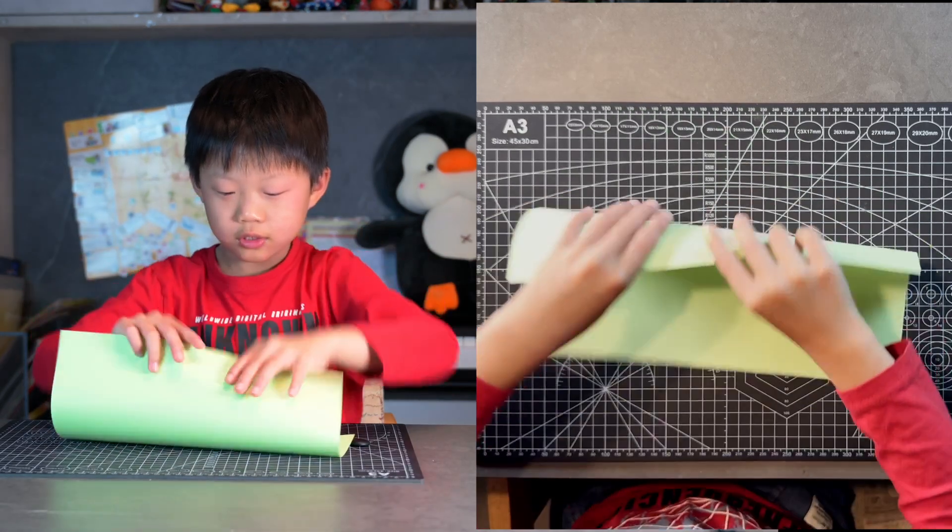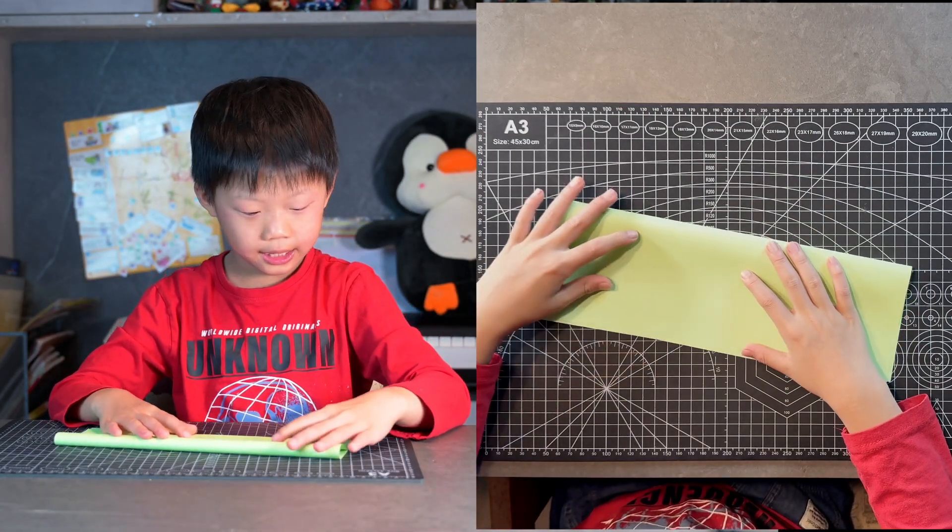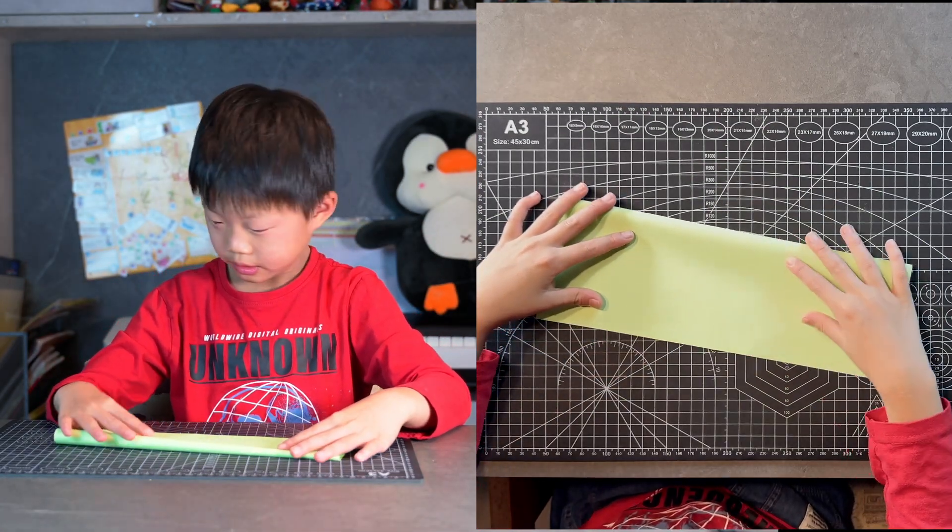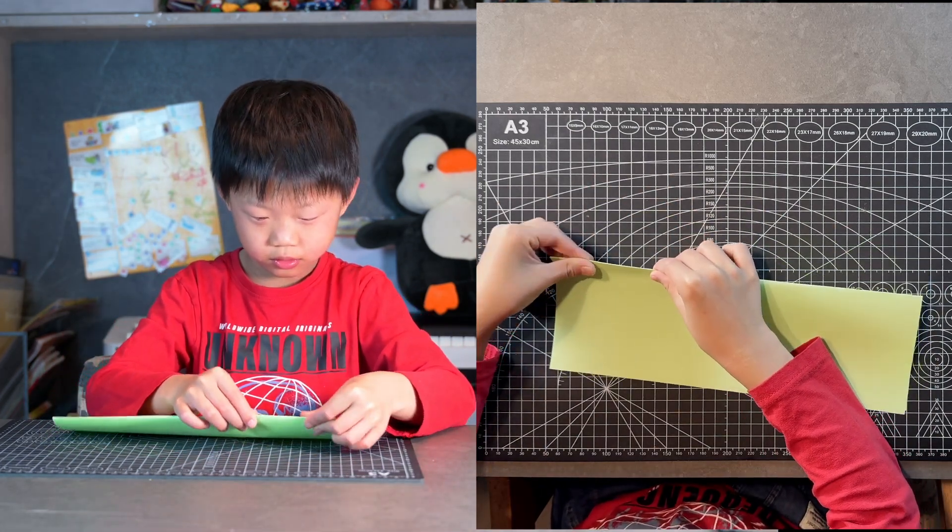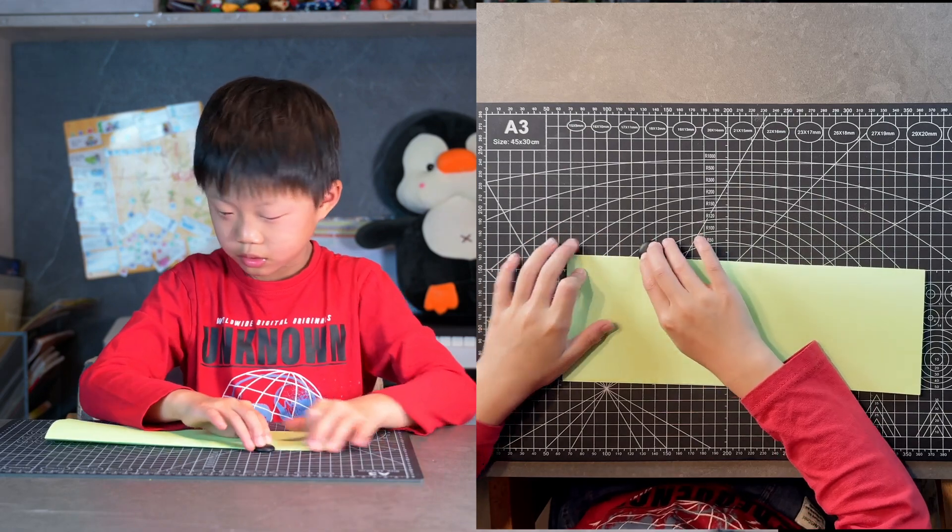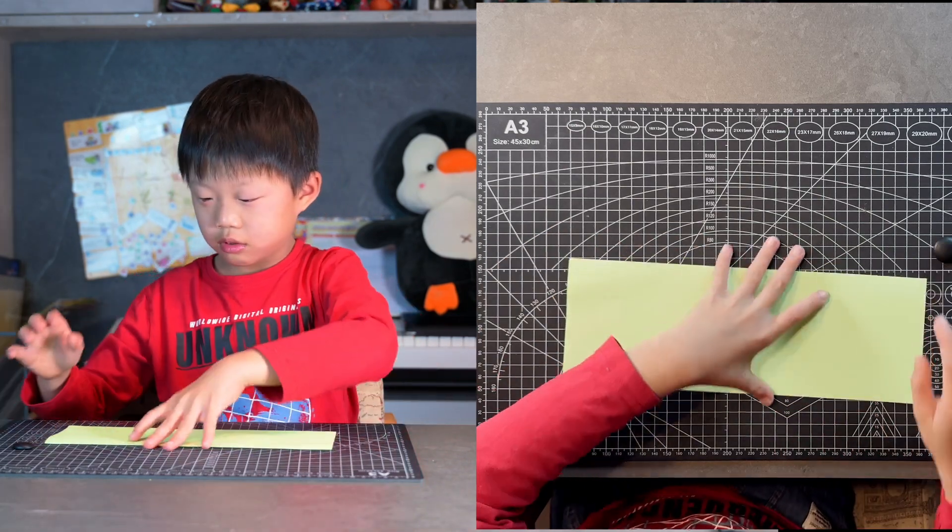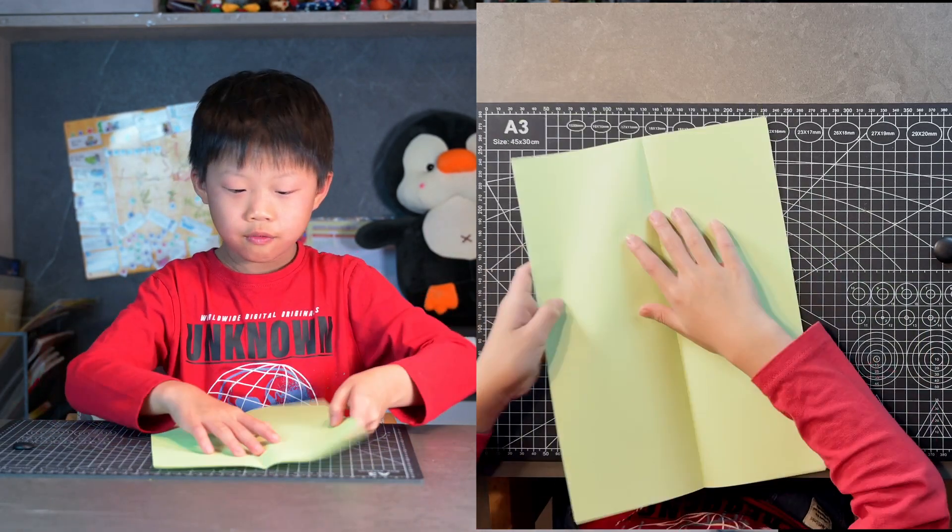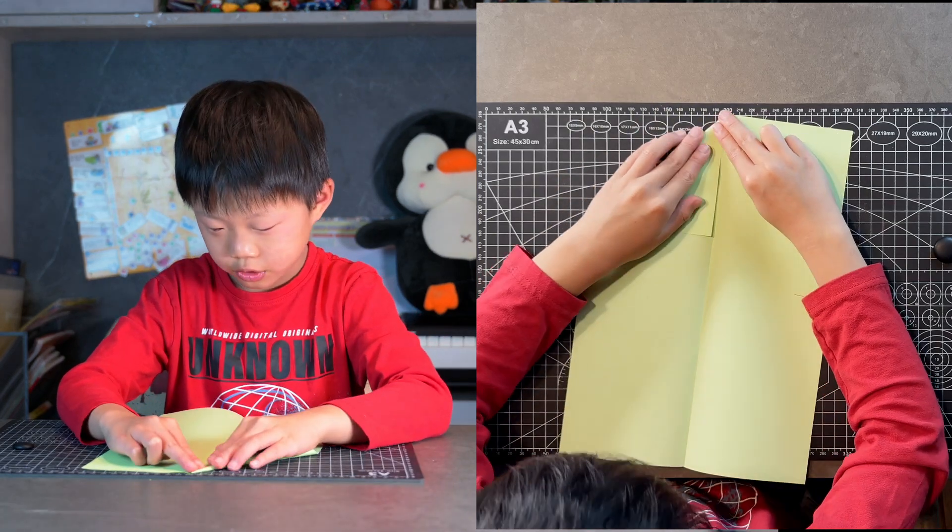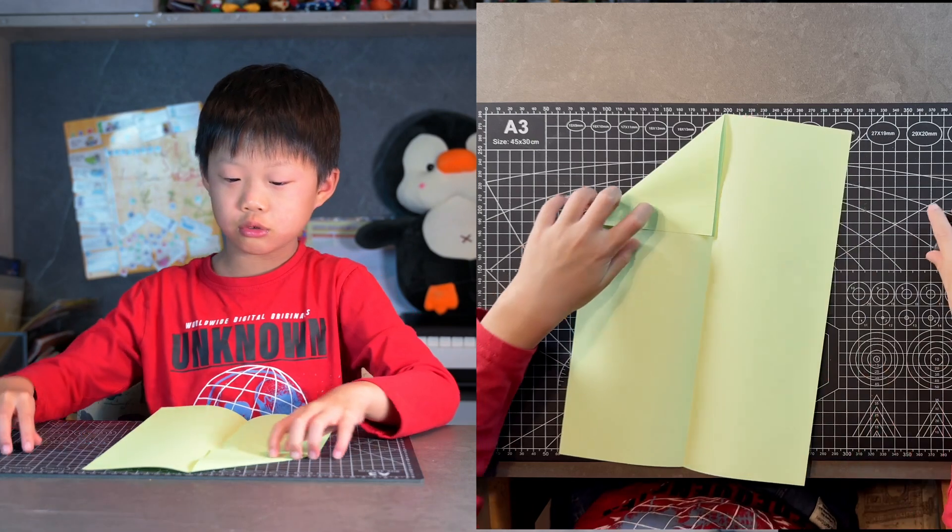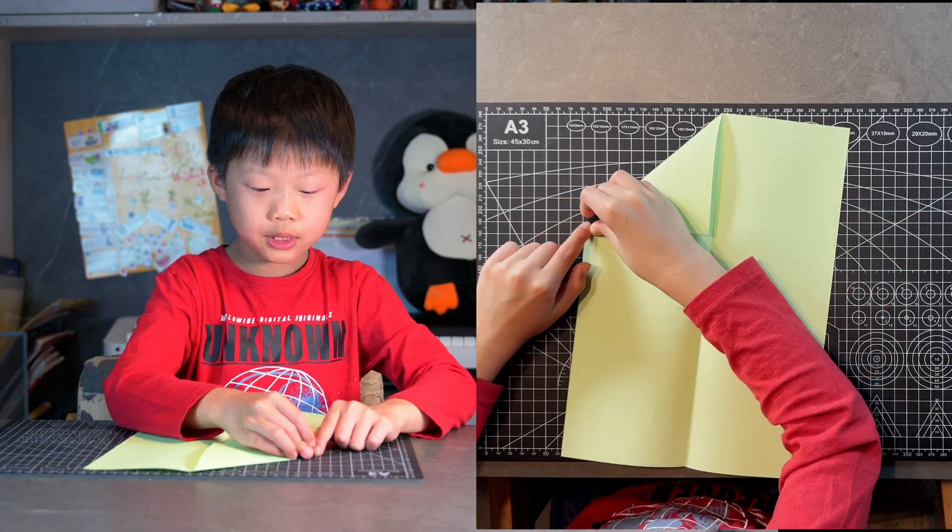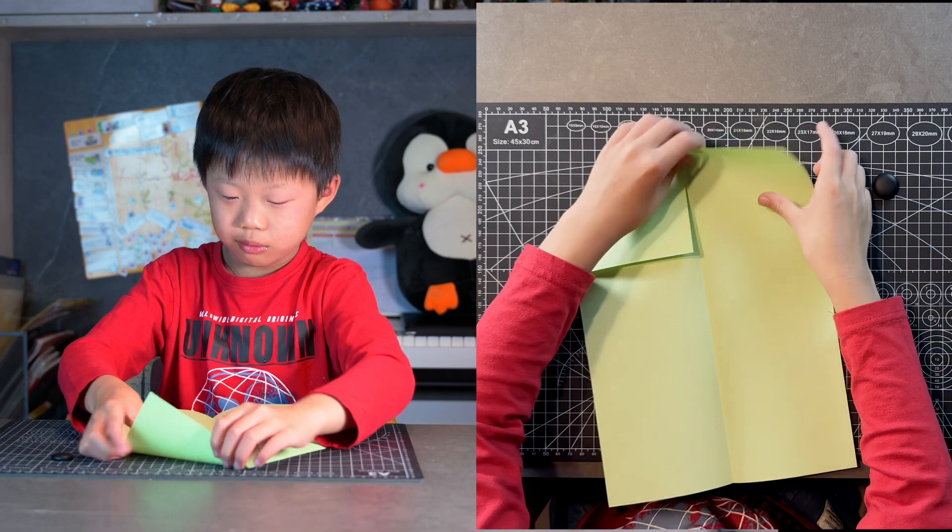Fold your paper in half. Open it up. Put your top edge to your center crease. Leave just a bit of a gap, but don't do too much, otherwise when we do the safety checks you'll have a lot of problems.